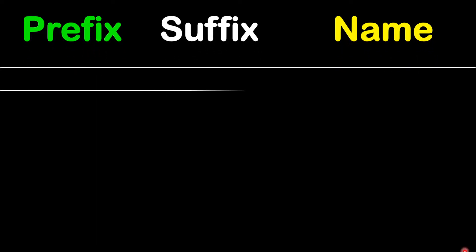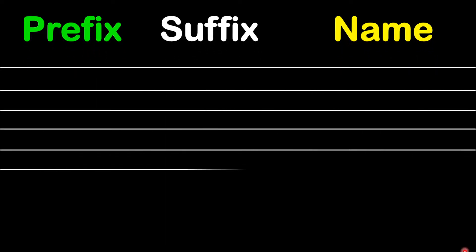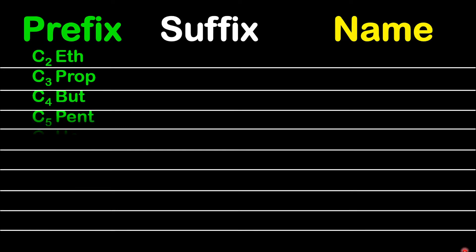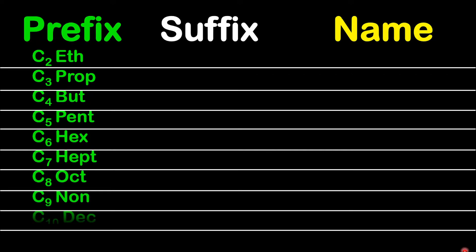Let's quickly draw a table to have this organized. The prefix goes by the number of carbon atoms: two carbons is eth-, three is prop-, four is but-, five is pent-, six is hex-, seven is hept-, eight is oct-, nine is non-, and ten is dec-.